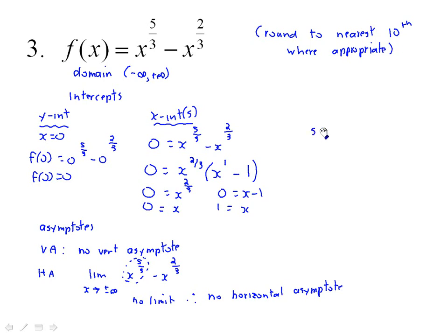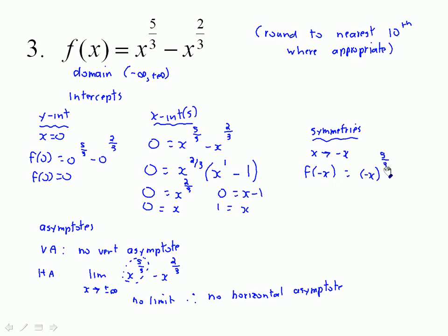Let's take a look for symmetries — the least important of all the measures. We replace x with negative x, so f(-x) = (-x)^(5/3) - (-x)^(2/3). It's hard to make sense of it in exponential form.